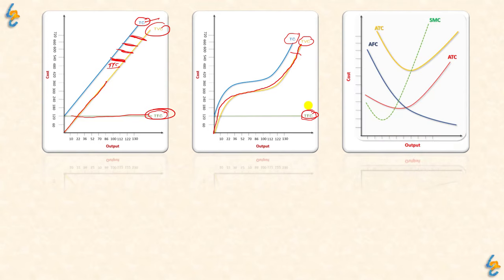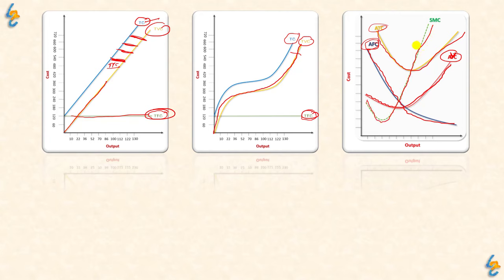In the last video, we also learned about average cost. Average variable cost is first downward sloping and then upward sloping. Average fixed cost is continuously downward sloping — it has a rectangular hyperbola shape. Short run marginal cost curve is also first downward sloping and then upward sloping. The short run marginal cost curve cuts the average cost curve at its minimum point.